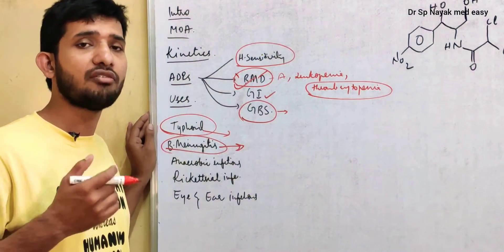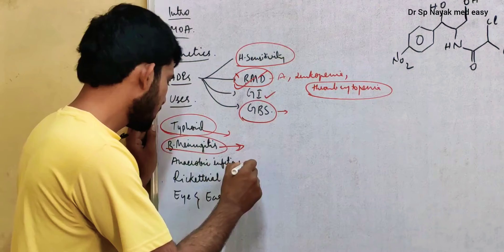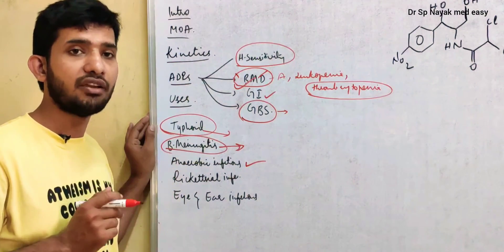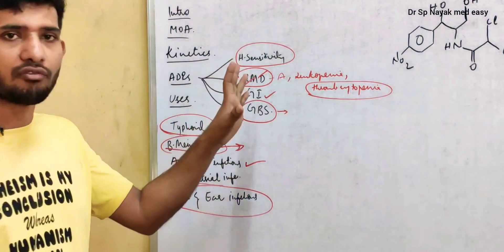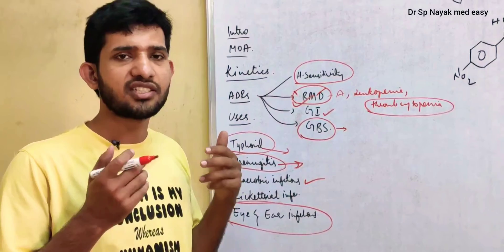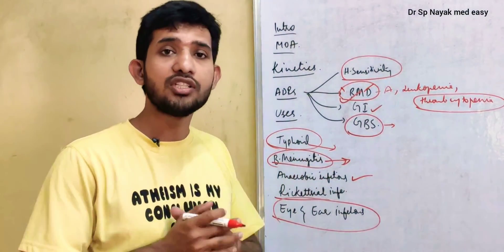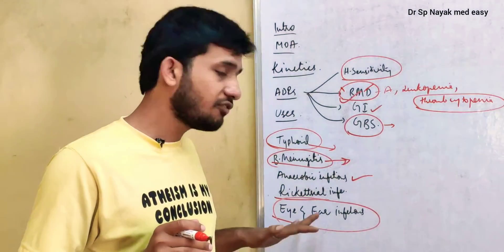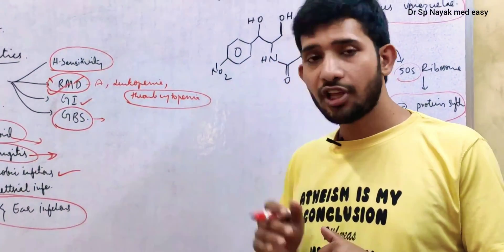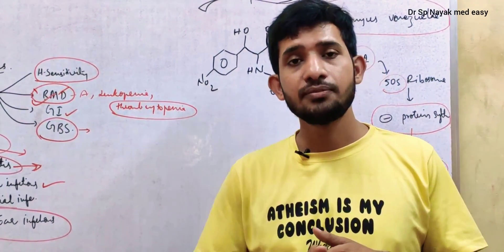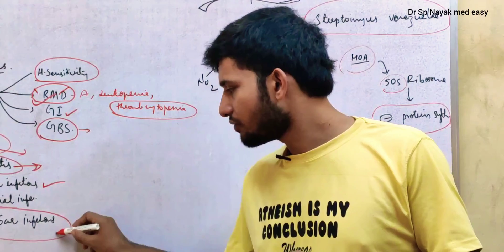For bacterial meningitis, we have many other drugs like penicillin, cephalosporins, and fluoroquinolones which are also very effective. In anaerobic infections, chloramphenicol is very effective. It is the drug of choice in rickettsial infections. Chloramphenicol is not used orally or systemically because it has many lethal adverse drug reactions. However, chloramphenicol is mainly used in eye infections and ear infections because it is also formulated for topical administration — it is very effective on bacterial conjunctivitis and ear infections such as otitis media.